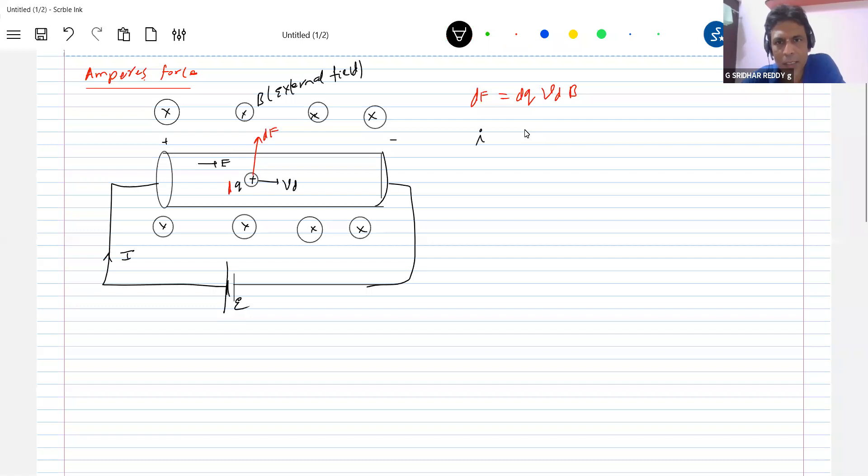And a current I is flowing. So what is the current I? How do we define I? The current I, we define DQ by DT. This DQ, I'll replace it. I DT.